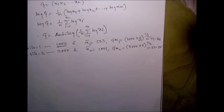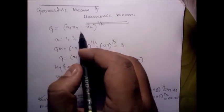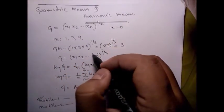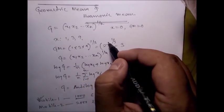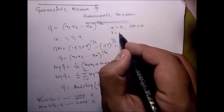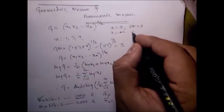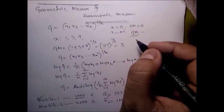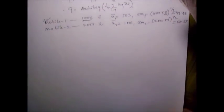Now, demerits of geometric mean. The formula is G = x1·x2·...·xn to the power 1/n. If any value is 0, the geometric mean will be 0. If any value is negative, the answer becomes imaginary. So those are the key demerits.